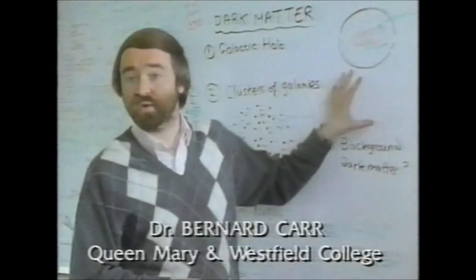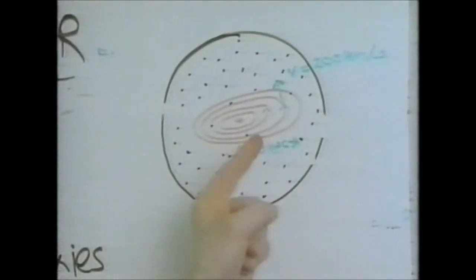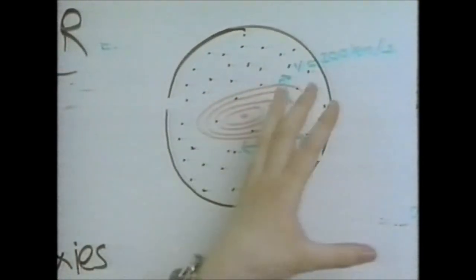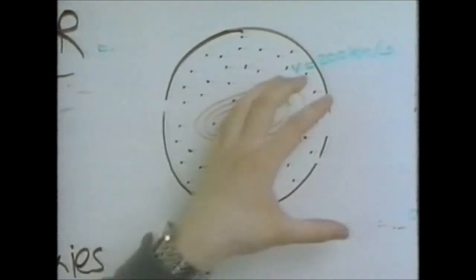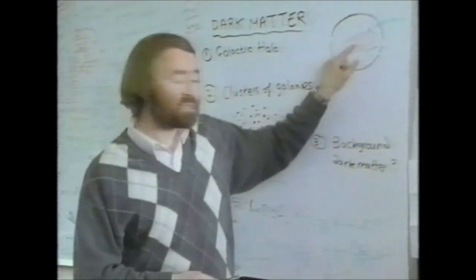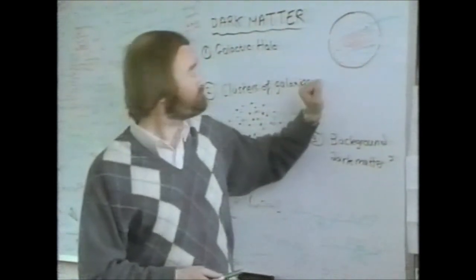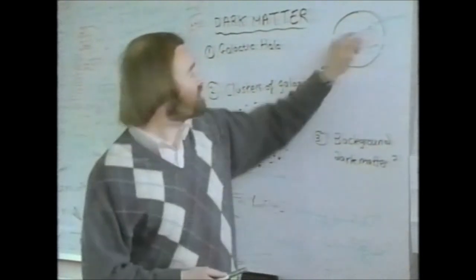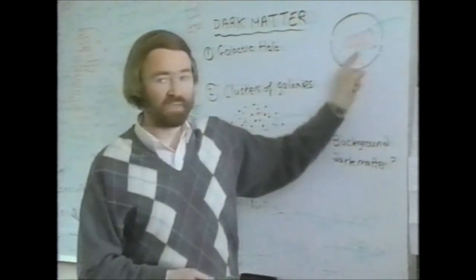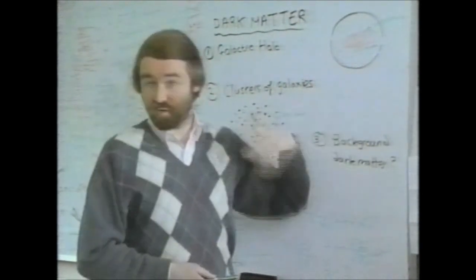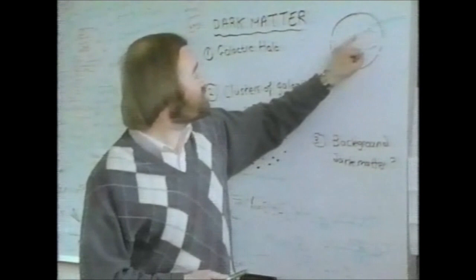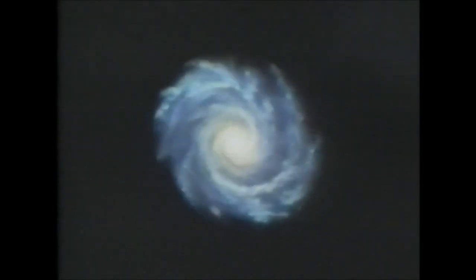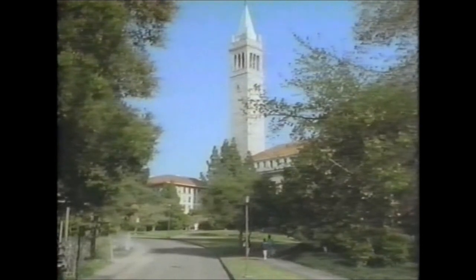There are several contexts in which evidence for dark matter arises. One context is when we study galaxies like our own Milky Way. The stars in a galaxy move around the center with a certain speed, and that speed tells us how much mass there is within the orbit of the star. If the only matter in the galaxy were the visible stars, one would expect this velocity to fall off as you go to greater distances from the center.